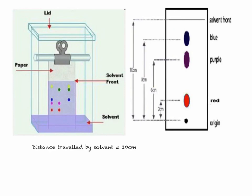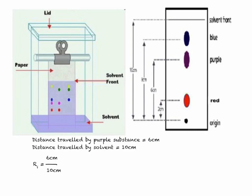From this chromatogram, we've been told that the purple spot has travelled 6 centimetres from the baseline. Therefore, we can calculate the RF value for the purple chemical: distance travelled by the substance is 6 centimetres, divided by the distance travelled by the solvent, which was 10 centimetres, giving an RF value of 0.6. Pause the video here and work out the RF values for the blue spot and the red spot. You should have found that the blue dot has an RF value of 0.8 (8 divided by 10), and the RF value for the red spot should be 0.2 (2 divided by 10).